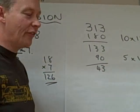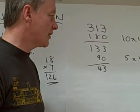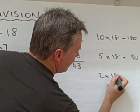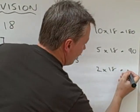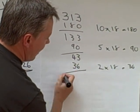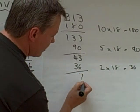And then I think I can squeeze another couple of chunks of 18 off. And I think I can say 2 times 18 equals 36. There's my 36 there. And what's left is 7.